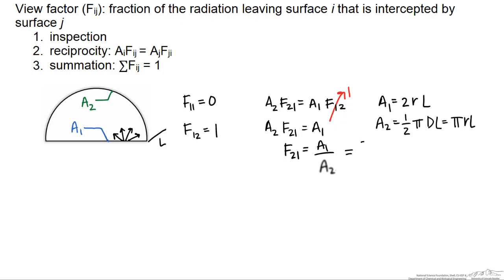If we take the ratio of the two, we get that F two one is equal to two over pi. And if we calculate that out, that equals 0.637.